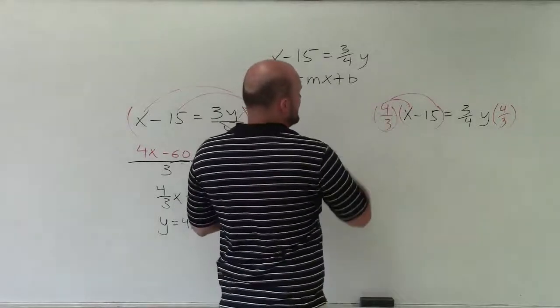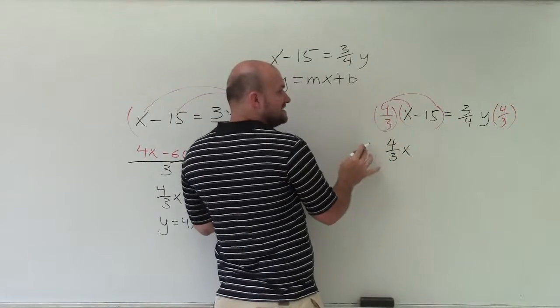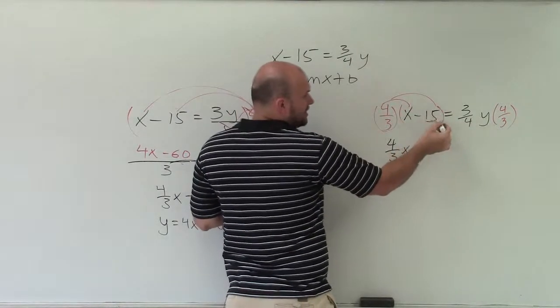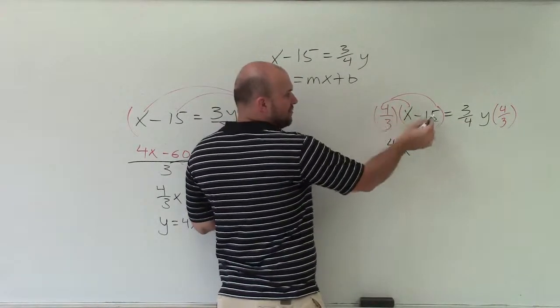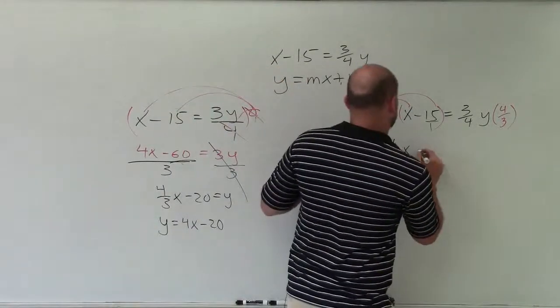So x times four-thirds is just going to be four-thirds x. And negative 15 times four-thirds, you multiply the numerator and then multiply the denominator. So 4 times negative 15 is negative 60 divided by 3, becomes negative 20.